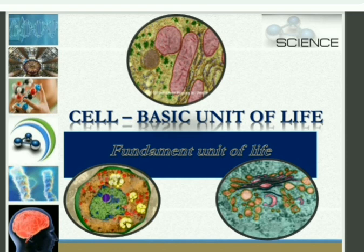When many cells combine together they form tissues, and when many tissues combine together they form an organ. When many organs combine together they form an organ system, and when many organ systems are combined together they give rise to an organism. So the smallest unit for making an organism — for making a life — is the cell.